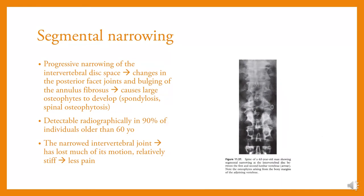Segmental narrowing involves progressive narrowing of the intervertebral disc space, changes in the posterior facet joints, and bulging of the annulus fibrosus, causing large osteophytes to develop. This is detectable radiographically in 90% of individuals older than 60 years. The narrowed intervertebral joint has lost most of its motion, becoming relatively stiff and less painful.